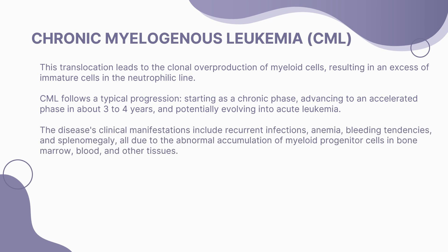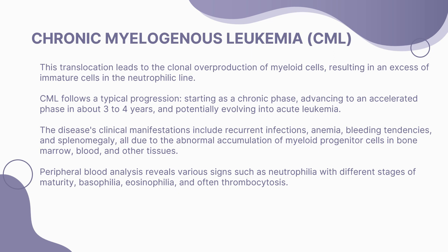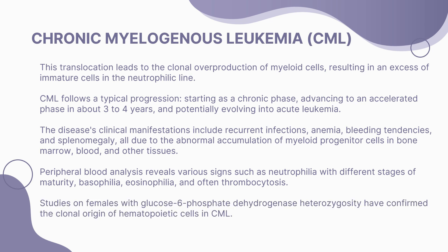Clinical manifestations of CML include recurrent infections, anemia, bleeding tendencies, and splenomegaly, all due to the abnormal accumulation of myeloid cells in bone marrow, blood, and other tissues. Peripheral blood analysis reveals neutrophilia with different stages of maturity, basophilia, eosinophilia, and often thrombocytosis. Studies have confirmed the clonal origin of hematopoietic cells in CML, particularly in females with glucose-6-phosphate dehydrogenase heterozygosity.